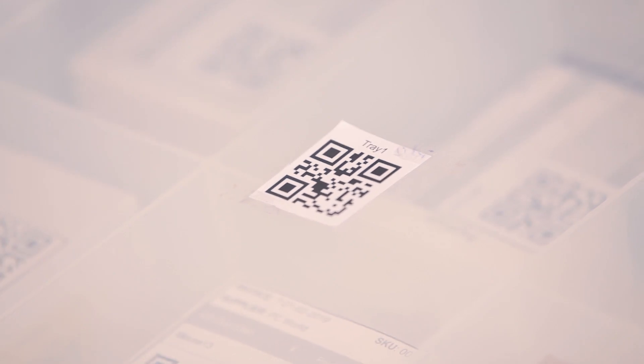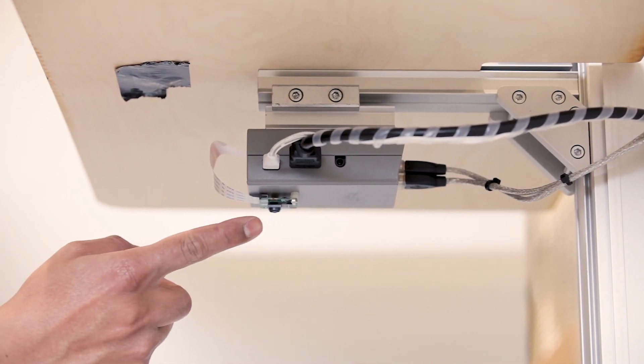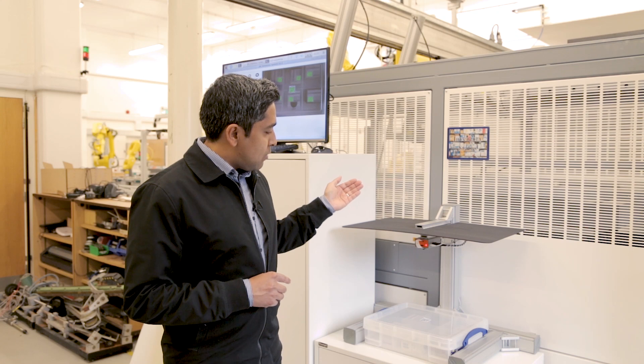We put all the parts inside a box and we scan the entire box under this low cost vision system which is comprised of a low cost Raspberry Pi and a low cost camera attached to it.